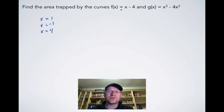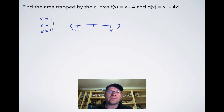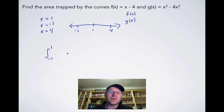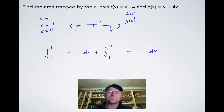Now we have two intervals: negative one to one, and one to four. For each interval, we pick a test point and plug it into both functions to determine which lies above the other. For the interval from negative one to one, we pick x equals 0. Plugging into f of x gives negative 4; plugging into g of x gives 0. Since 0 is greater than negative 4, g of x is on top for this first interval.